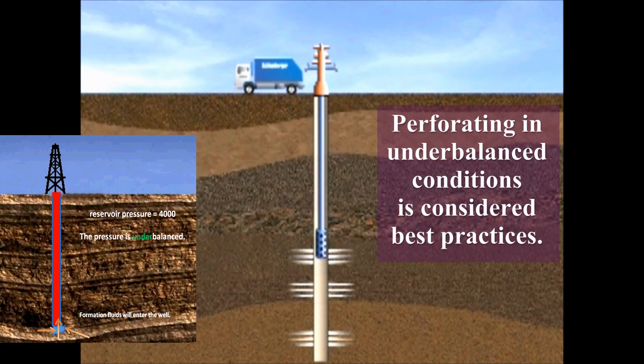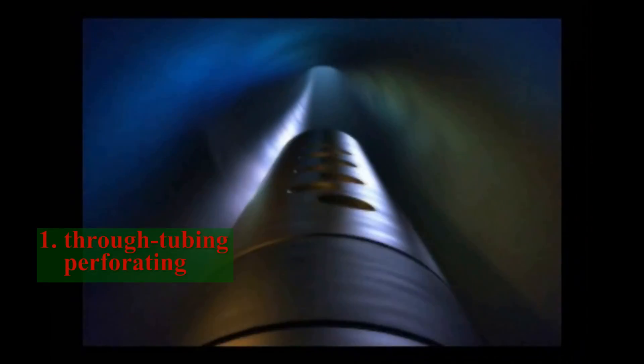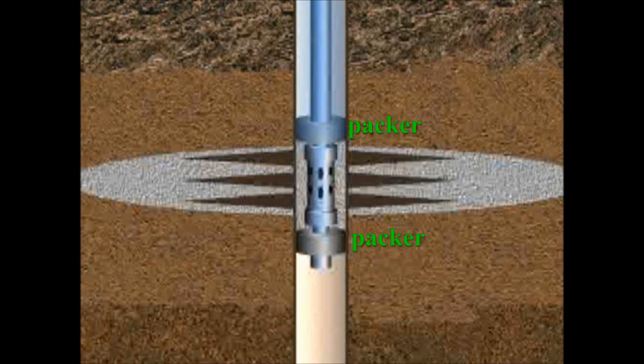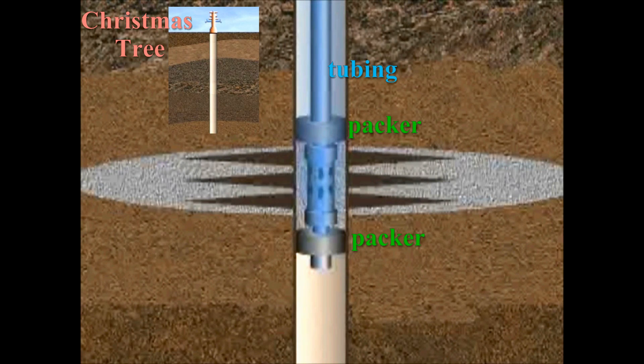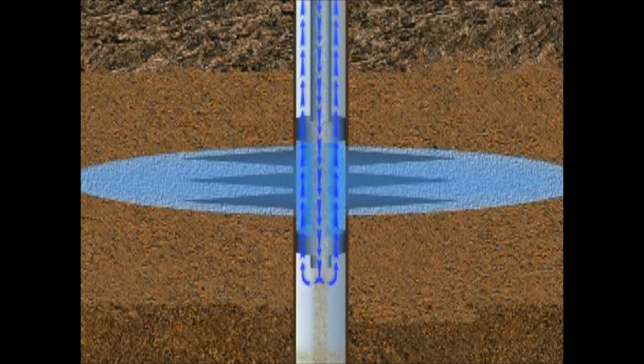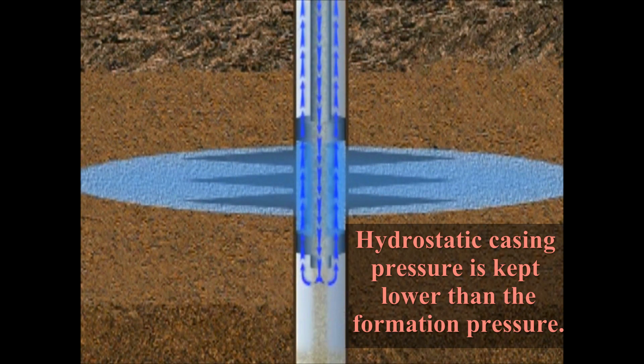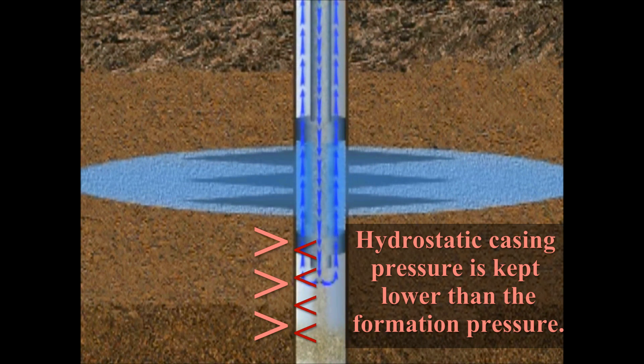Perforating in under-balanced conditions is considered best practices. In under-balanced perforating, wireline through tubing perforating with a small diameter gun that can fit through the existing tubing is performed after the well has been prepared for production with the aforementioned packers, tubing, and surface valving called a Christmas tree. With the packers and Christmas tree in place, the fluid level in the casing can then be kept low so that its hydrostatic pressure is less than the formation pressure.